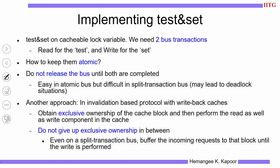Not releasing the bus is alright for an atomic bus, but difficult for a split-transaction bus as it may lead to deadlock. Hence, holding the block in exclusive mode is a better option. The two approaches: do not release the bus until both operations are completed (good for atomic bus, problematic for split-transaction), or obtain the block in exclusive ownership with invalidation-based write-back caches, then perform both the read and write before releasing.